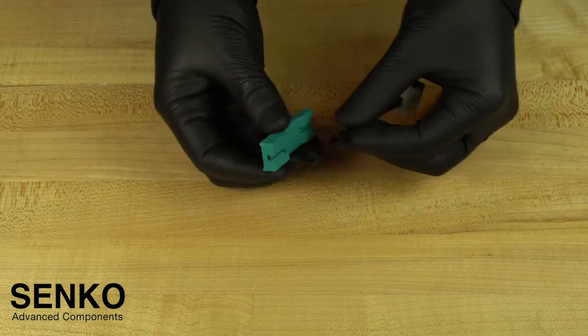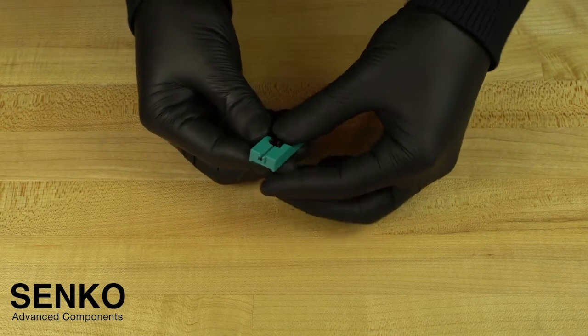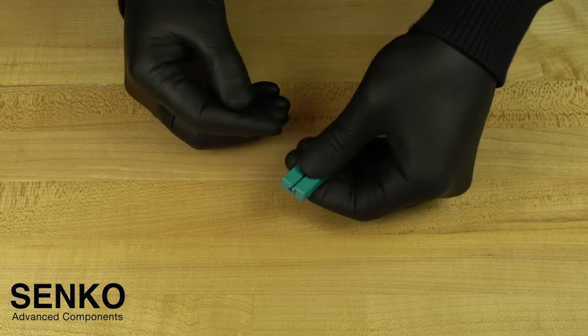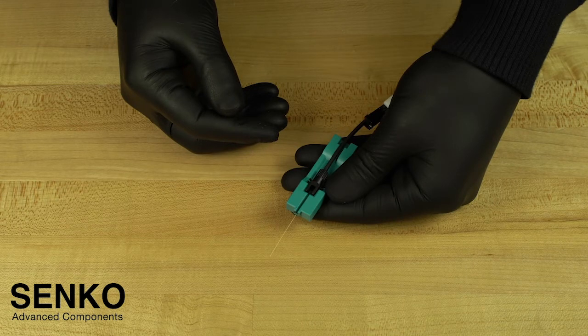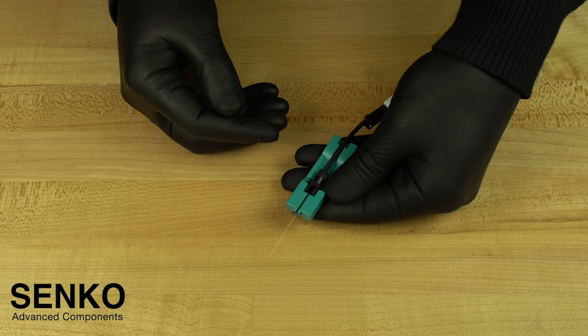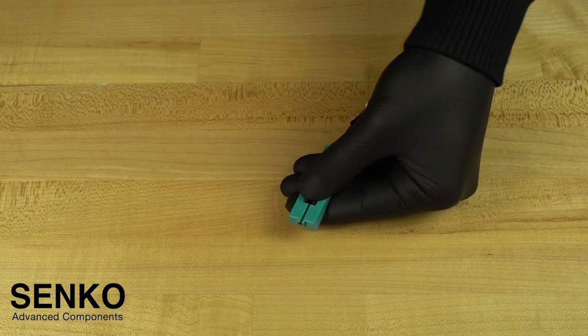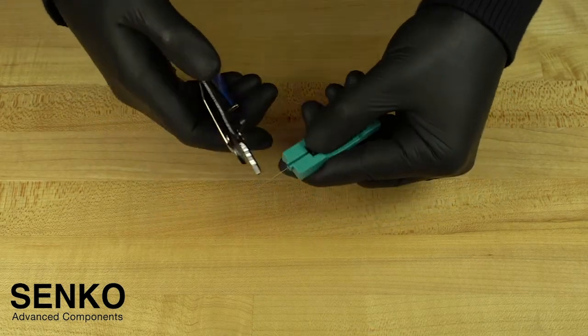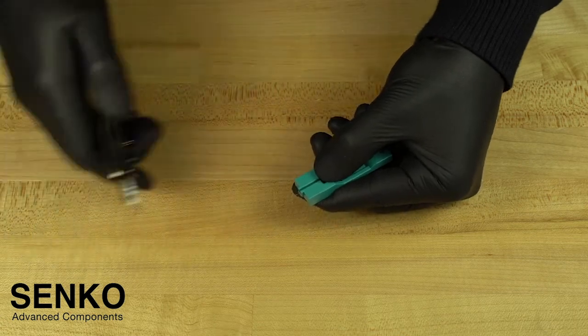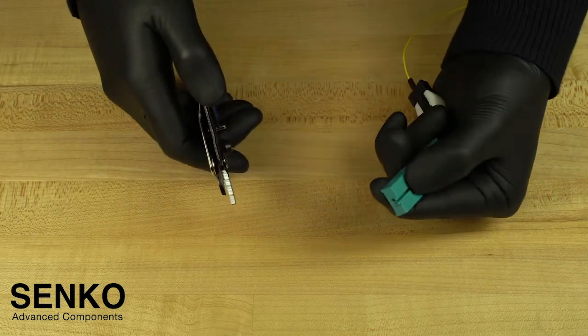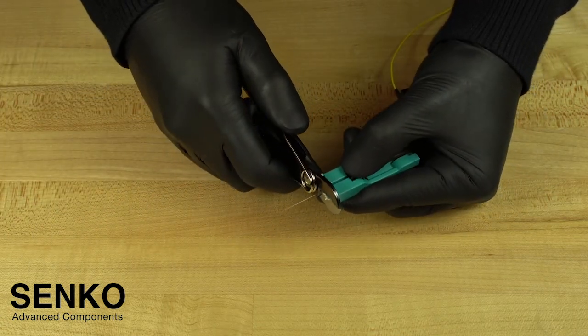The next steps are to prepare the fiber for cleaving. You need to insert the back post assembly into the cut guide spacer. This cut guide spacer helps to determine the amount of 250 micron coating you need to strip off the fiber, and it helps keep the fiber at exactly the right length. It is recommended to leave the cable assembly in the cut spacer as you strip the coating from the fiber. Here, you can see we are very carefully stripping the coating from the tip of the cut spacer to the end of the fiber.